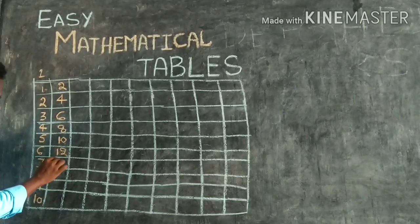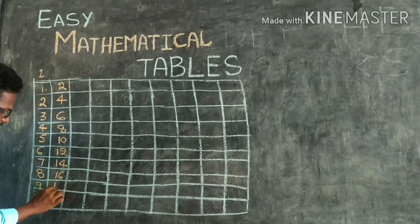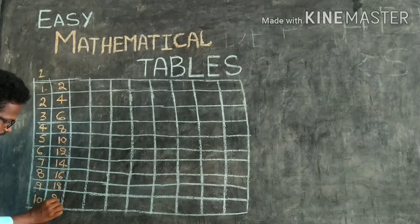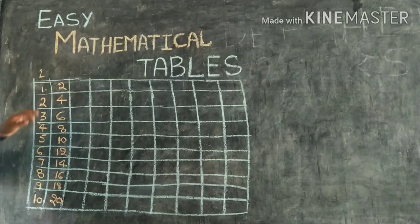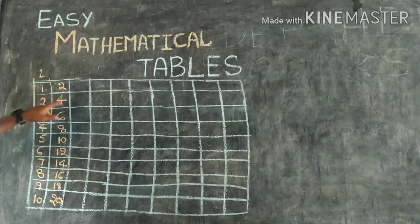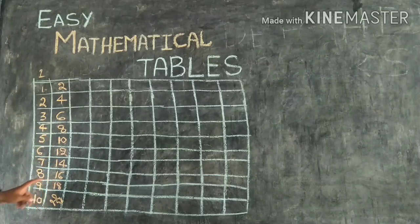Then 13, 14, 15, 16, 17, 18, 19, 20. You just consider this is a box: 1st box, 2nd box, 3rd box, 4th box, 5th box, 6th box, 7th box, 8th, 9th, 10th, 11th, 12th, 13th, 14th, 15th, 16th, 17th, 18th, 19th, 20th. This is the 2nd table.